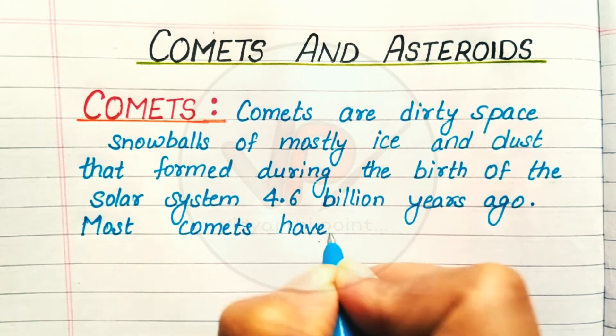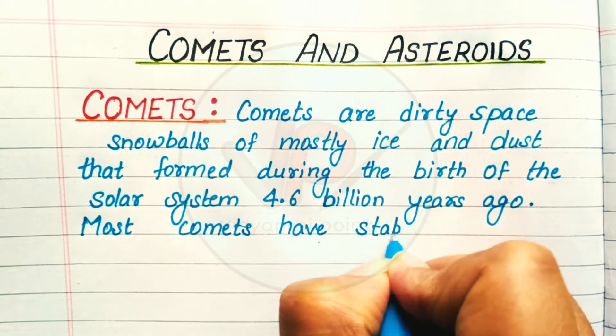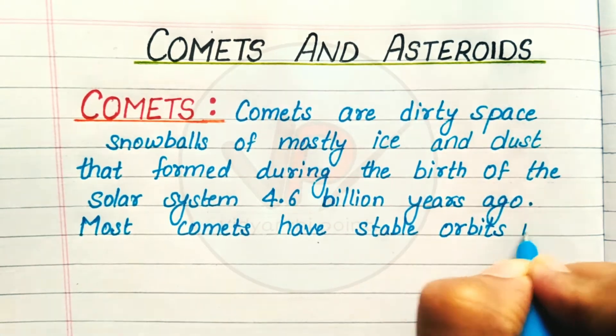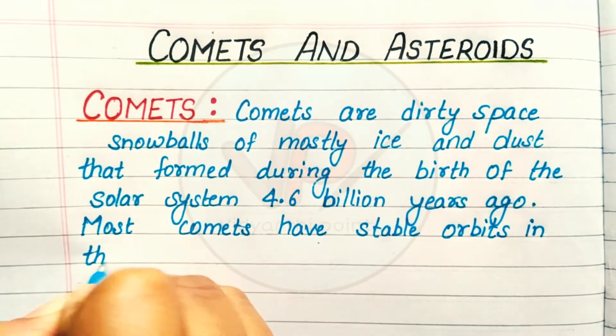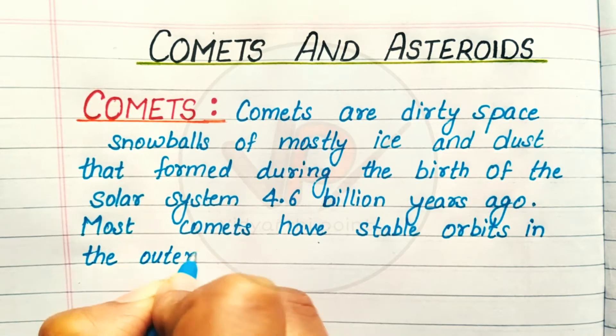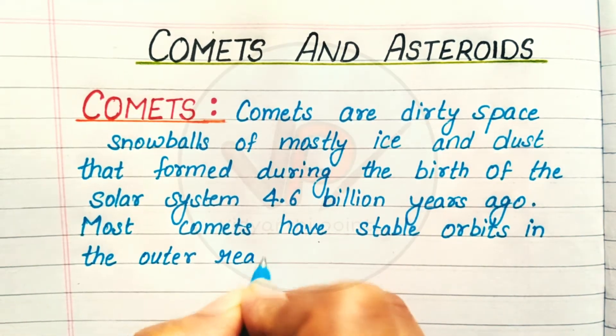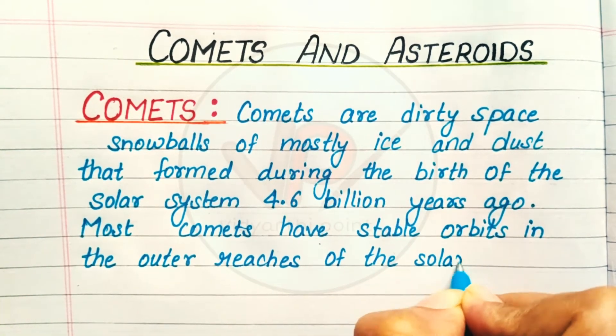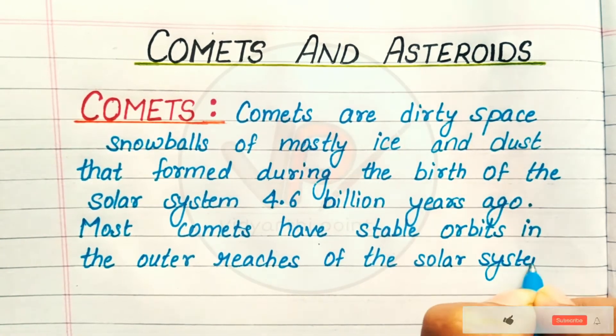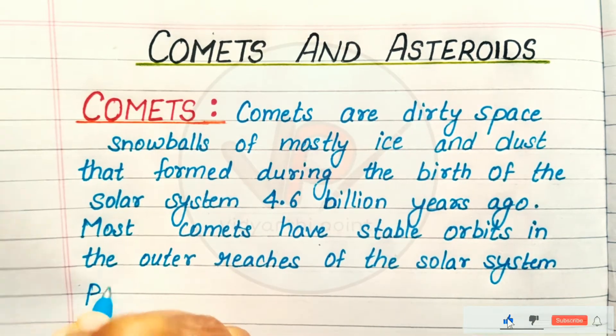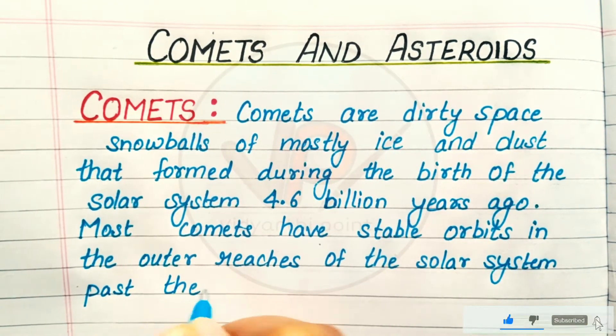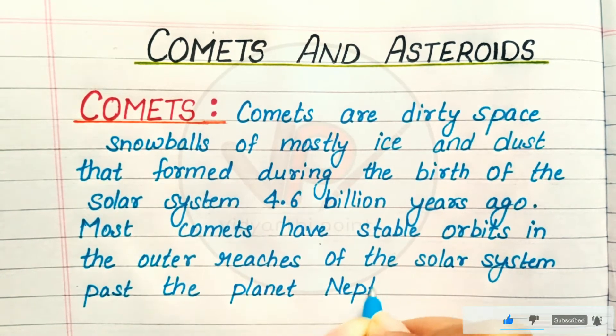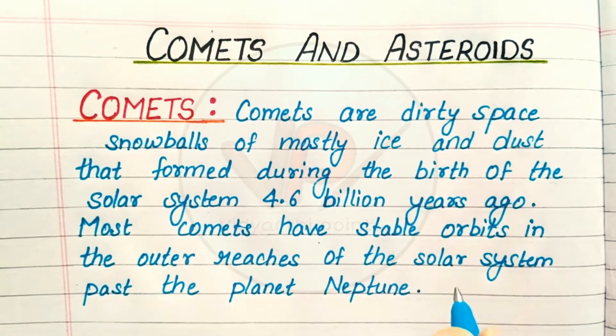Most comets have stable orbits in the outer reaches of the solar system past the planet Neptune.